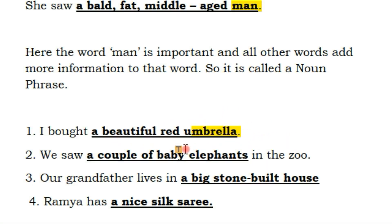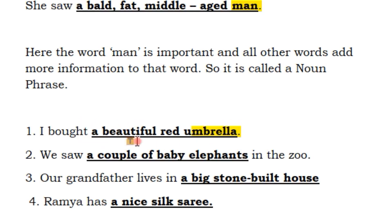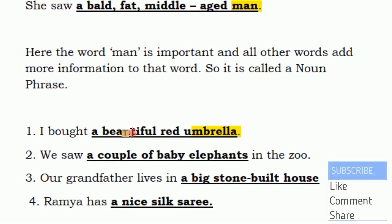What is called 'the beautiful umbrella'? The noun phrase. Why is it a phrase? What is the sentence? In 'this beautiful umbrella,' the umbrella is the subject. Then it is followed by a verb. In general, the sentence is: subject, verb, and object.